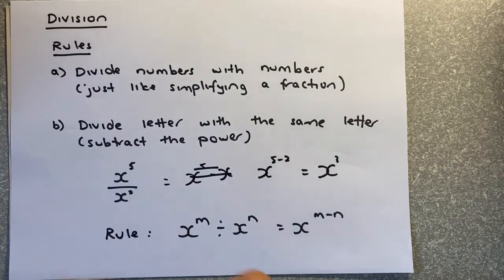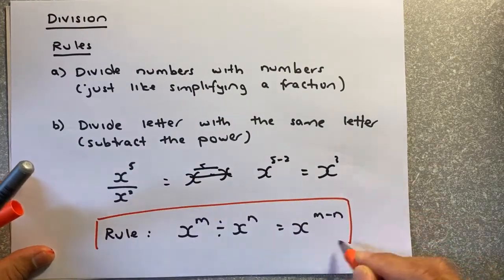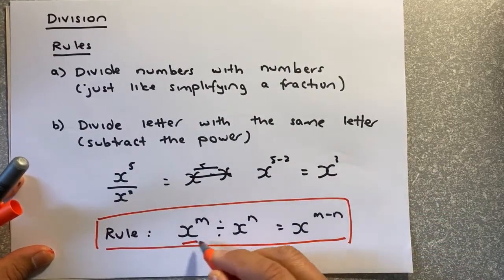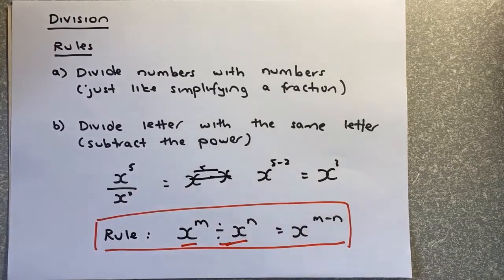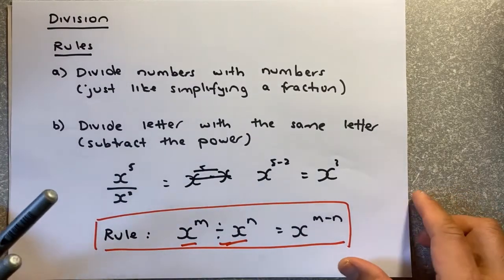So we come up with rule number 2. If you have a division, xm over xn, the base are the same. And you divide the power. You take away the power, m minus n.